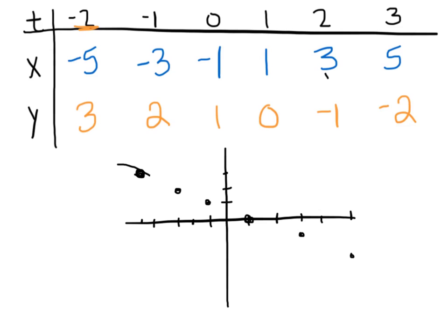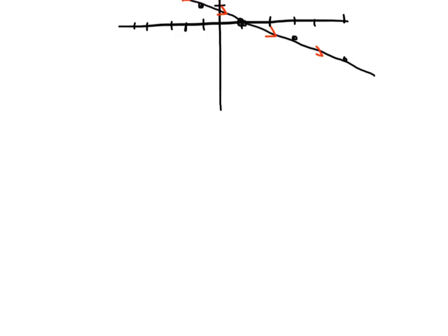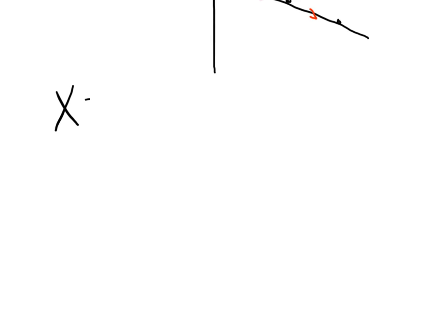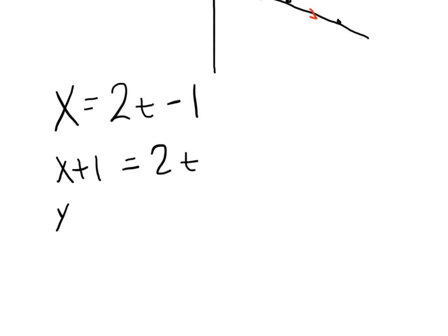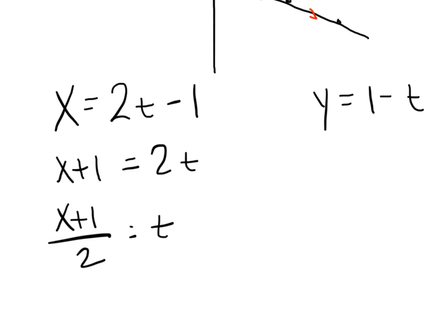What we've got is a straight line passing through those points. We also want to indicate the direction — I like to put a little arrow between each set of points to show how we got from one point to the next. Arrows are a good thing because direction is very, very important. Now to eliminate the parameter: I'm going to start with the x equation and solve for t. We get x plus 1 equals 2t, so t equals (x plus 1) over 2. Then we substitute that expression into the y equation: instead of y equals 1 minus t, we get y equals 1 minus (x plus 1) over 2.